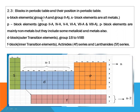S block elements belong to groups 1A and 2A. P block elements range from group 3A to 8A and include metals, non-metals, and metalloids — three categories. D block elements are also known as transition elements, from group 1B to 8B. F block elements are called inner transition elements, having two series: the lanthanide series (4f) and the actinide series (5f).